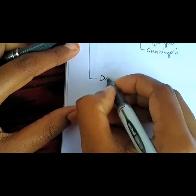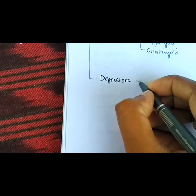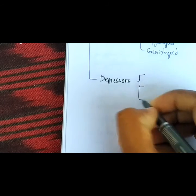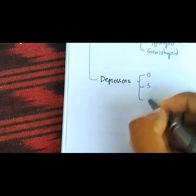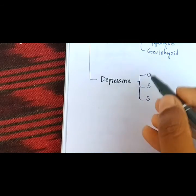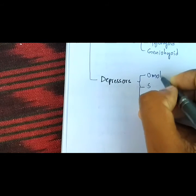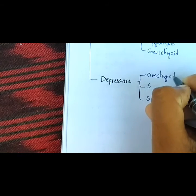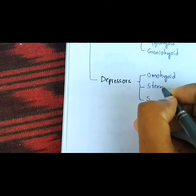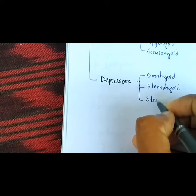Now let's move on to depressors of larynx. In the depressors we have the OSS of the TOS — these are the remaining strap muscles except thyrohyoid, which comes under primary elevators. They are omohyoid, sternohyoid and sternothyroid.